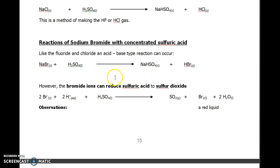However, it is a much stronger reducing agent than the chloride or the fluoride. Therefore, the bromide ions reduce the sulfuric acid to sulfur dioxide. You need to learn this equation.